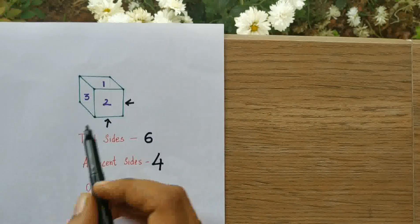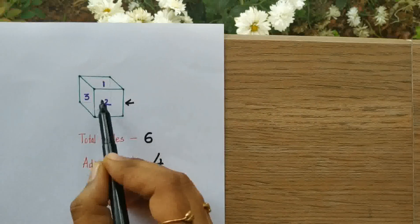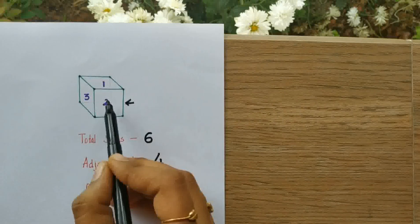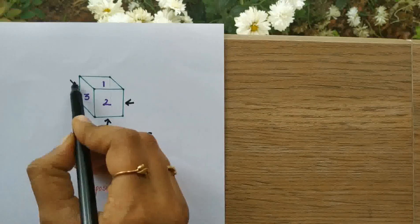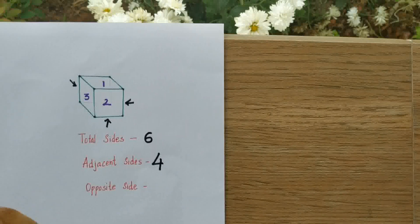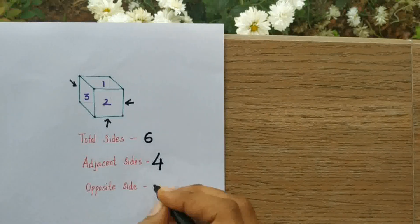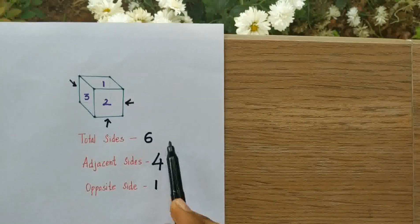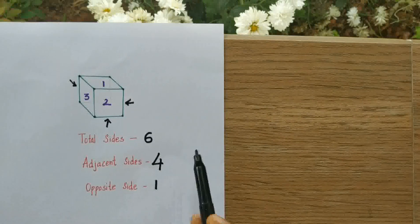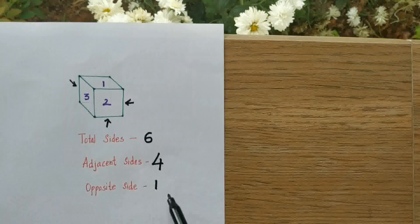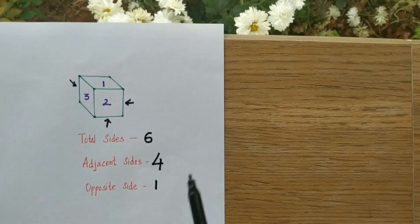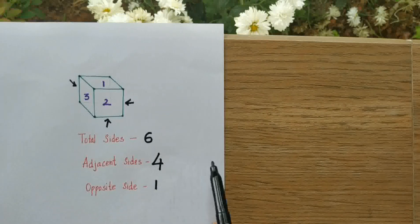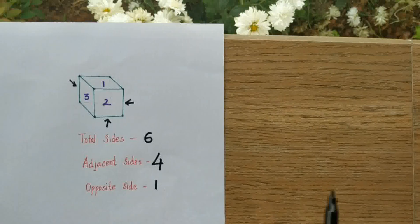How many opposite sides does it have? Let's consider face two again — the opposite side will be in the other direction, so it will have just one. So totally we have six sides, four adjacent sides for any particular face, and one opposite side. Adding that face number — two in this case — that gives us six.